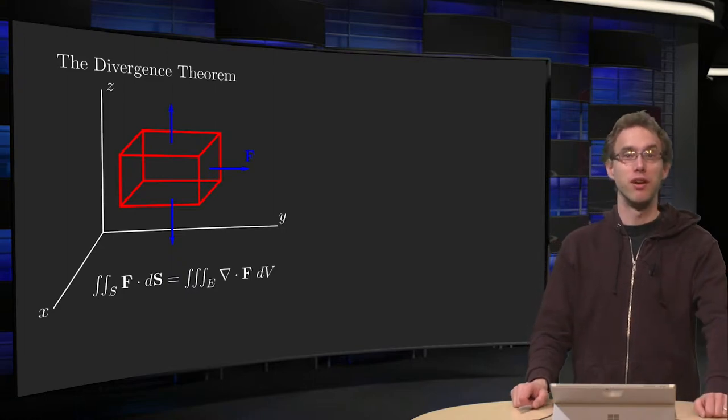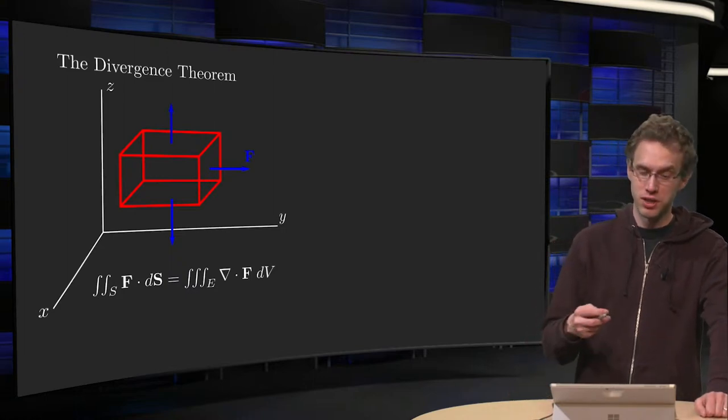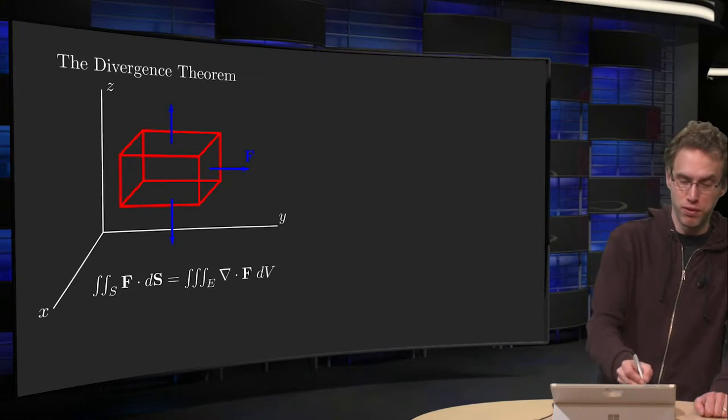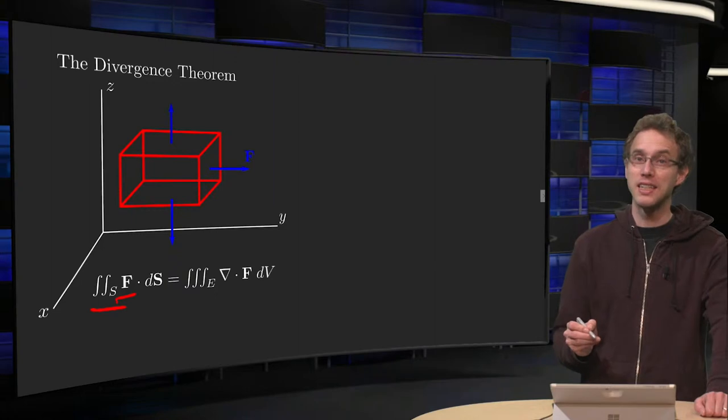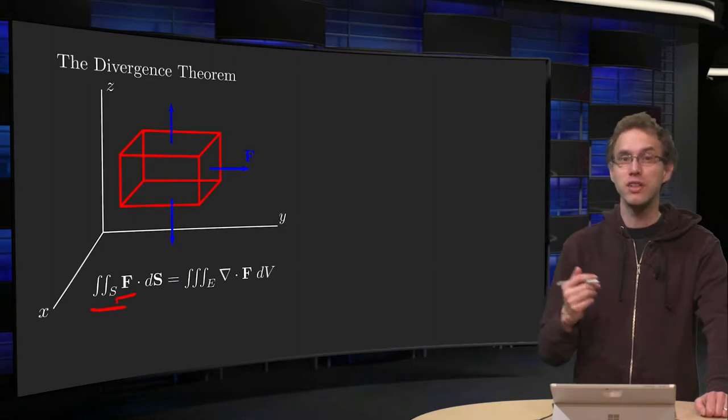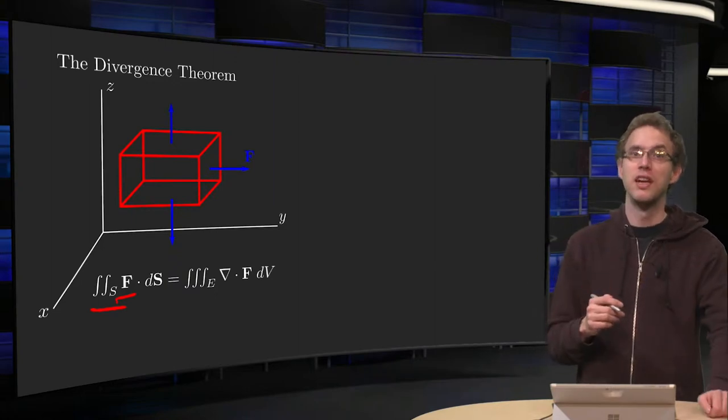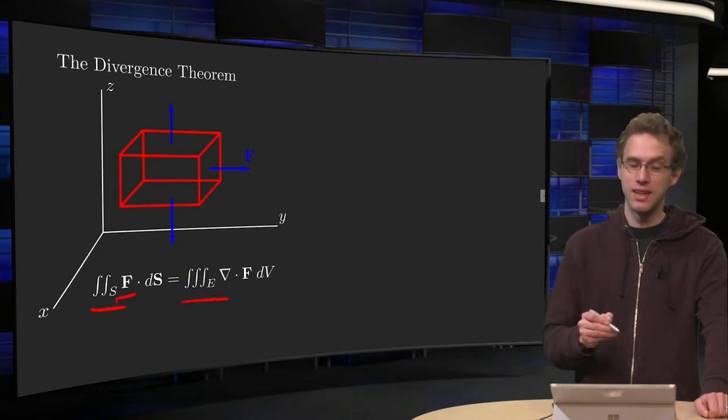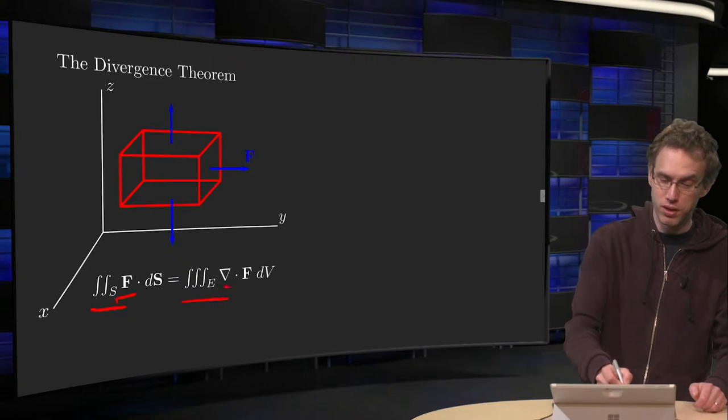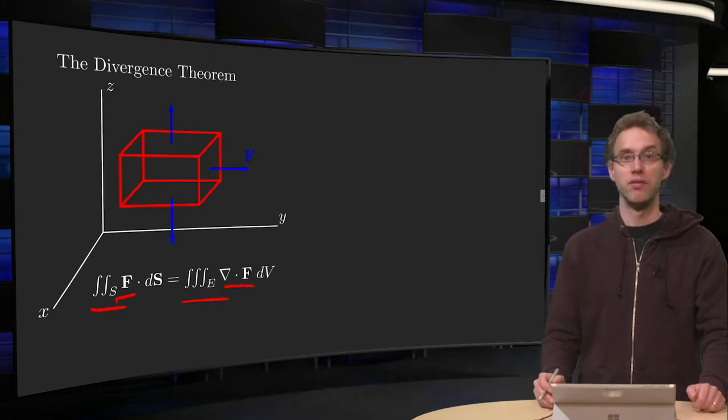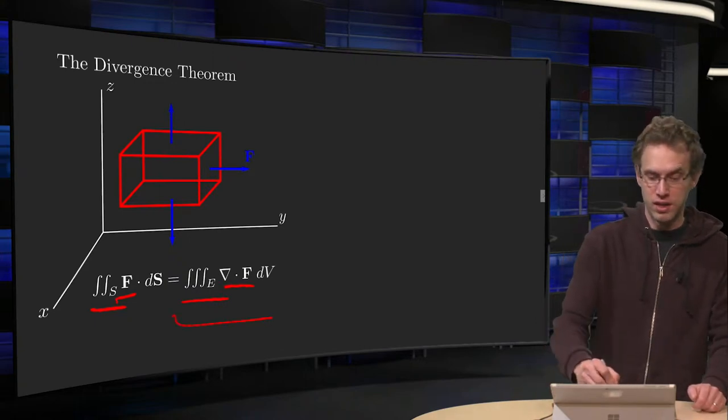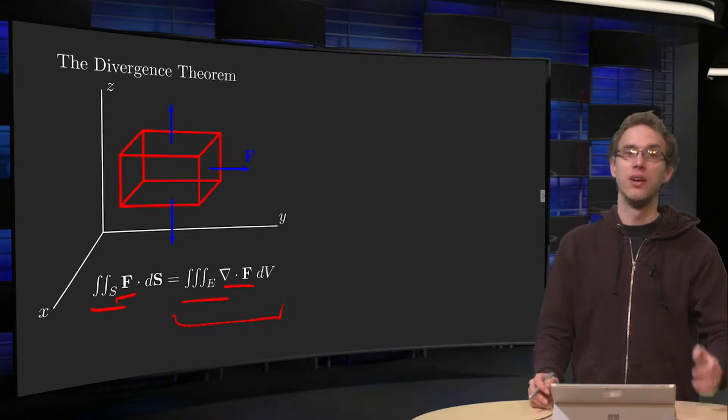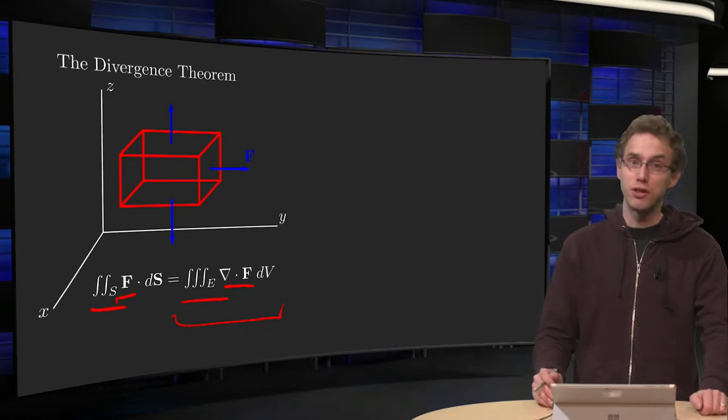So what does the Divergence Theorem tell us? If you want to compute the flux of some vector field F over some surface S, then we can convert this integral, this flux, into a triple integral over the solid E. And then we have to compute the triple integral of the divergence of capital F, and usually this second integral is easier than the first one.